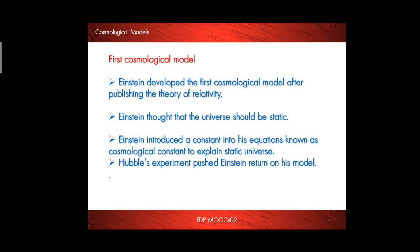First cosmological model. Einstein developed the first cosmological model after publishing the theory of relativity. Einstein thought that the universe should be static, so Einstein introduced a constant known as cosmological constant in his equations to explain the static universe. But after Hubble's experiment, it is proved that our universe is not static and instead it is accelerating.